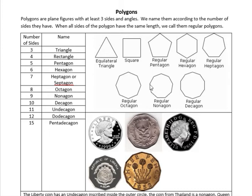A nonagon has nine sides, and a decagon has ten sides. You might recognize deca as the prefix for decade, which is ten years.